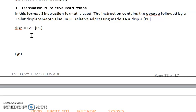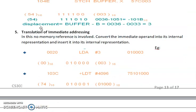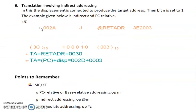The same method is used for base-relative addressing. Instead of the PC, the base register is used. Next, for indirect addressing mode, the displacement value is computed to produce the target address, and after calculating the target address the flag bits N, I, X, B, P — there are 6 flag bits — and the N bit will be set to 1.